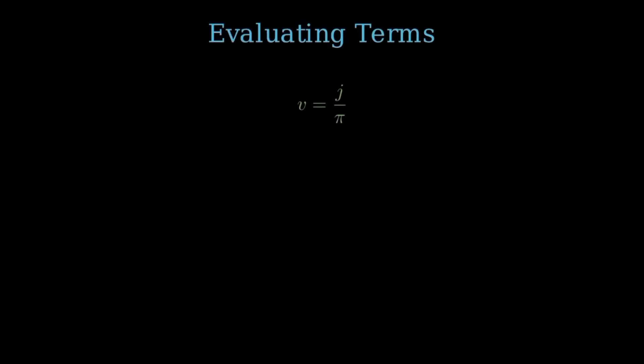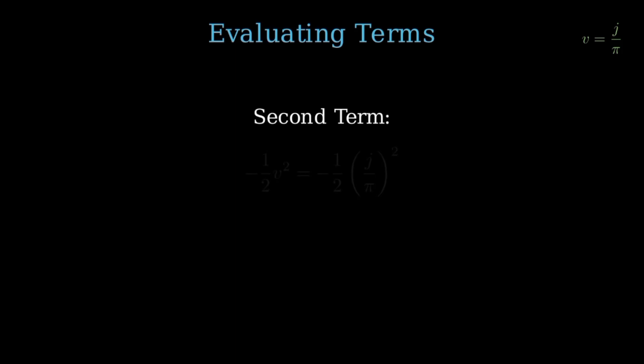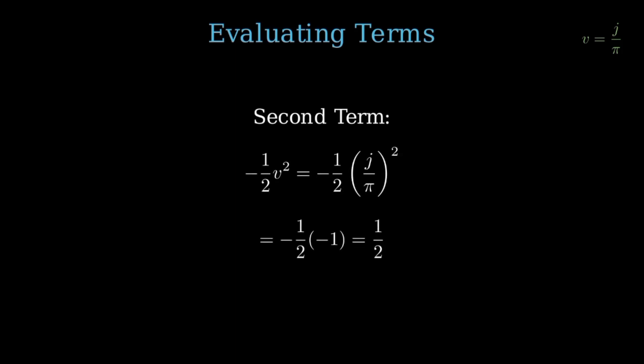Now that we've set v equal to j over pi, let's evaluate each term in the series under this transformation. The first term is simply v, which is j over pi. The second term is negative one-half times v squared. Substituting v, this becomes negative one-half times (j over pi) squared. Since j squared equals negative pi squared, (j over pi) squared equals negative pi squared divided by pi squared, which simplifies to negative 1. Then negative one-half times negative 1 equals positive one-half. So the second term simplifies to one-half.